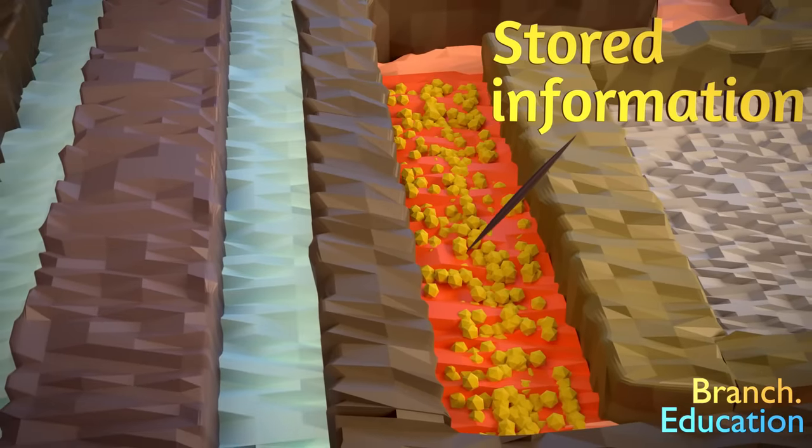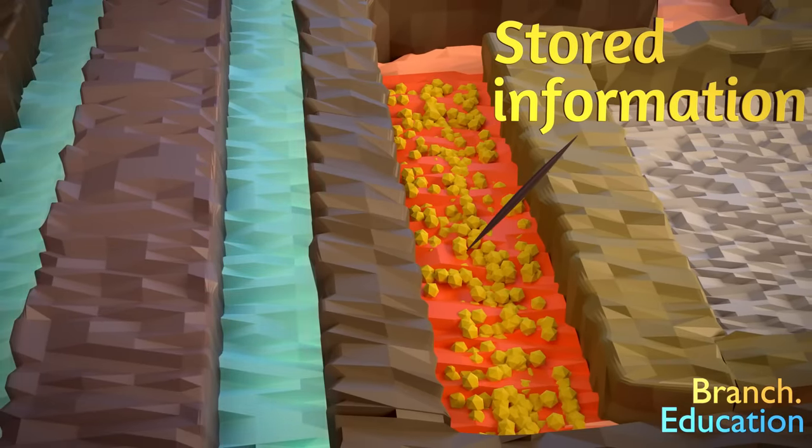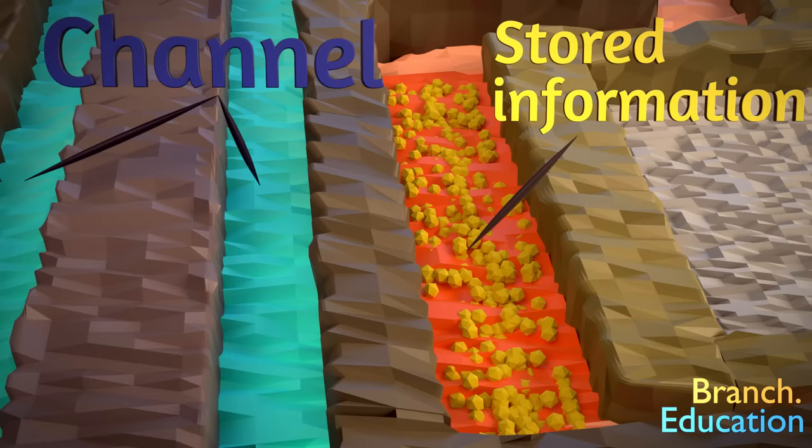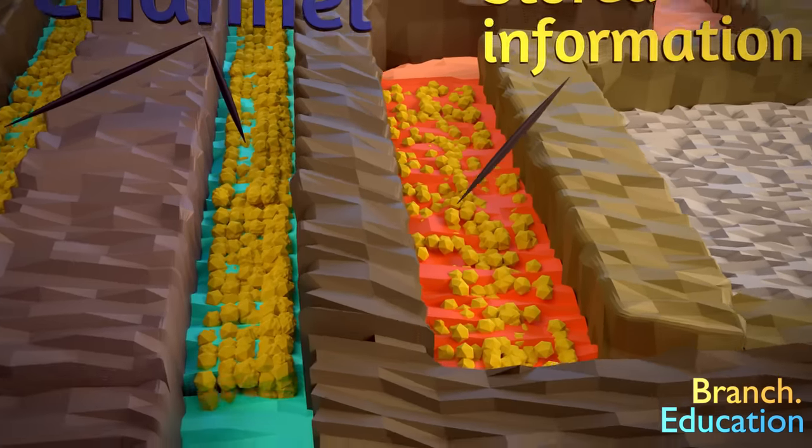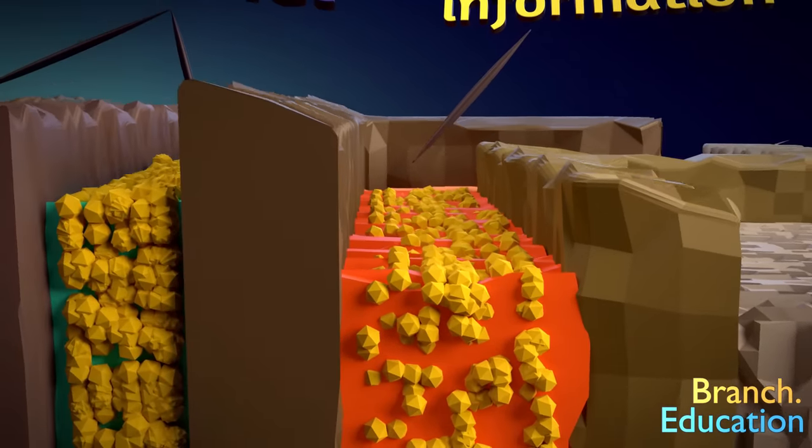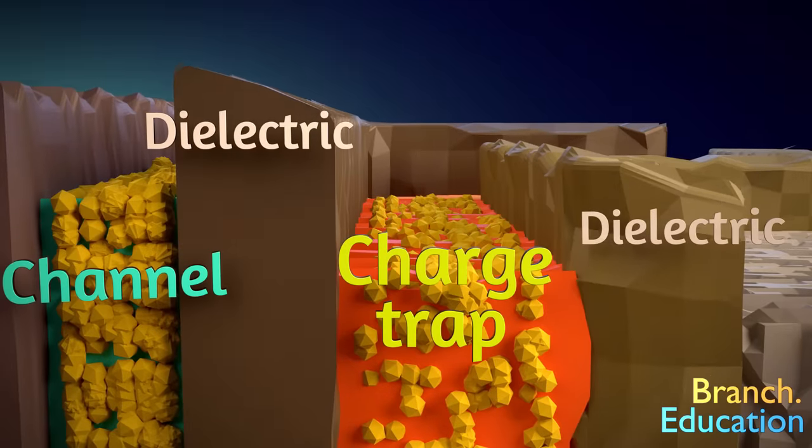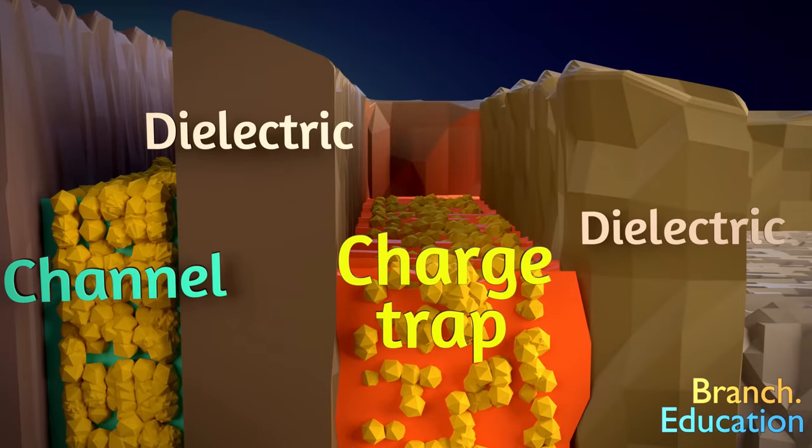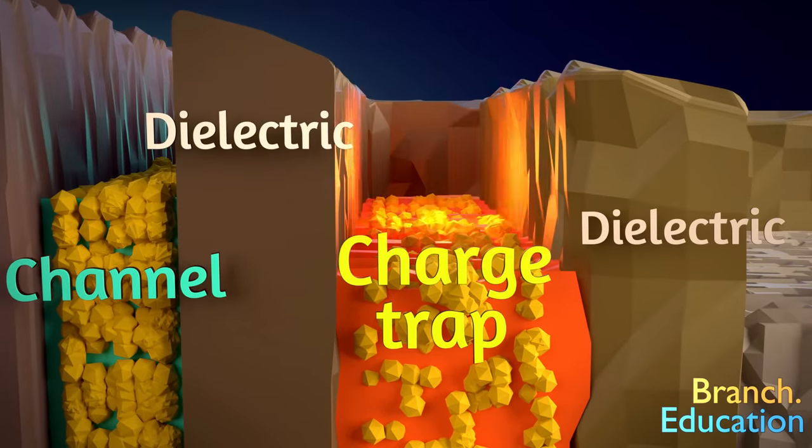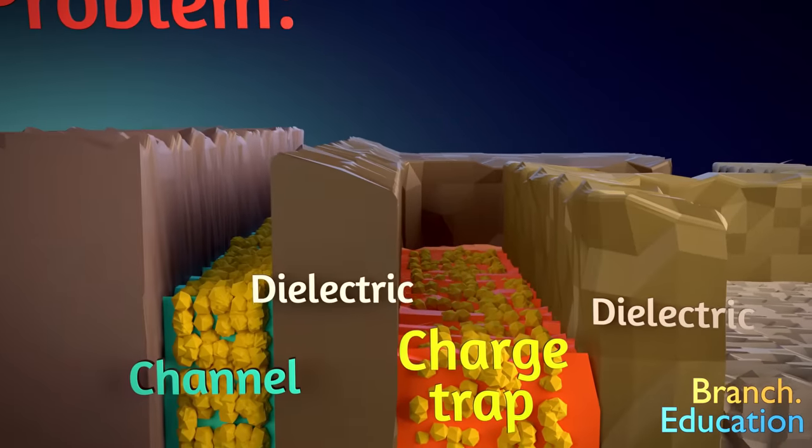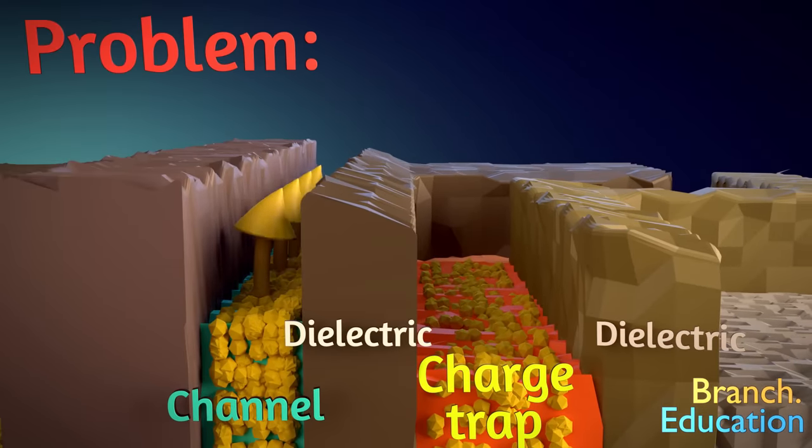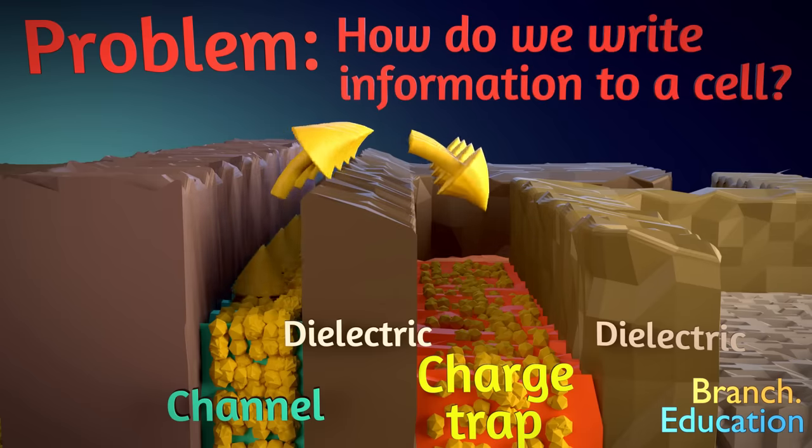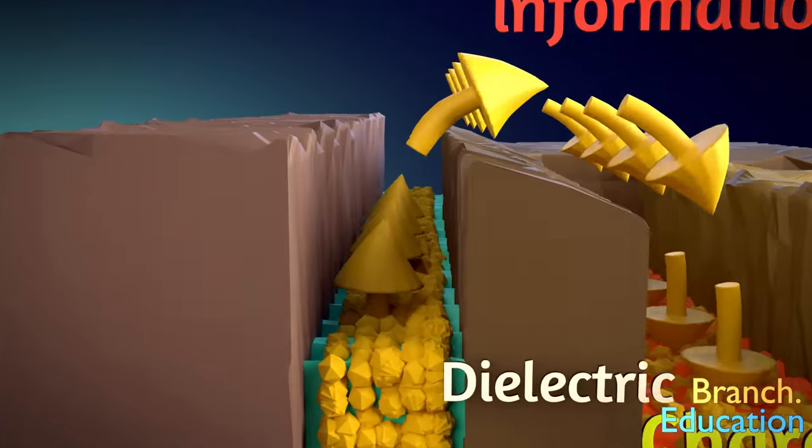However, this setup poses a new issue. You see, the channel where the electrons come from is over here on the other side of the dielectric barrier in a valley of its own. Now we have two valleys with a rather high barrier in the middle. Electrons can now comfortably stay in one valley or the other. But here's the problem. How do we move the electrons we want from the channel, across the dielectric, and into the charge trap valley? Or, in other words, how do we write information to a memory cell?